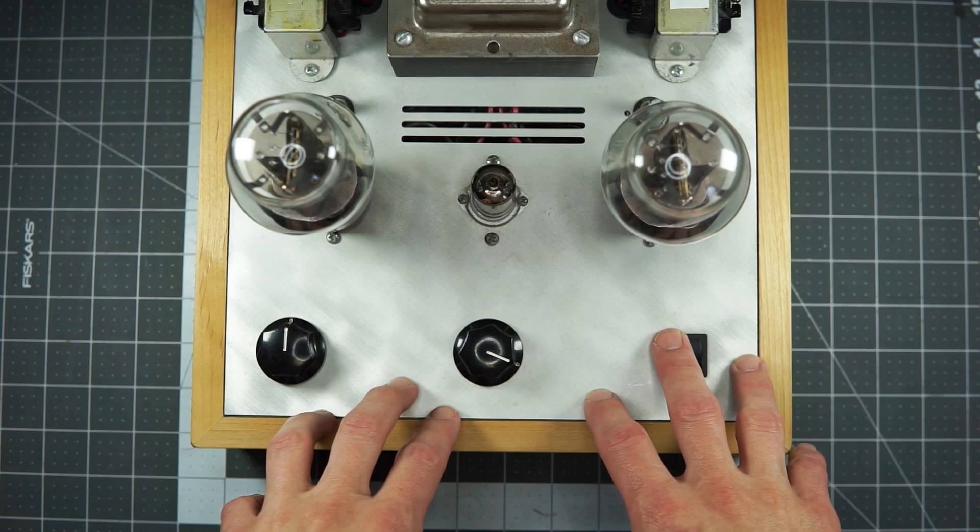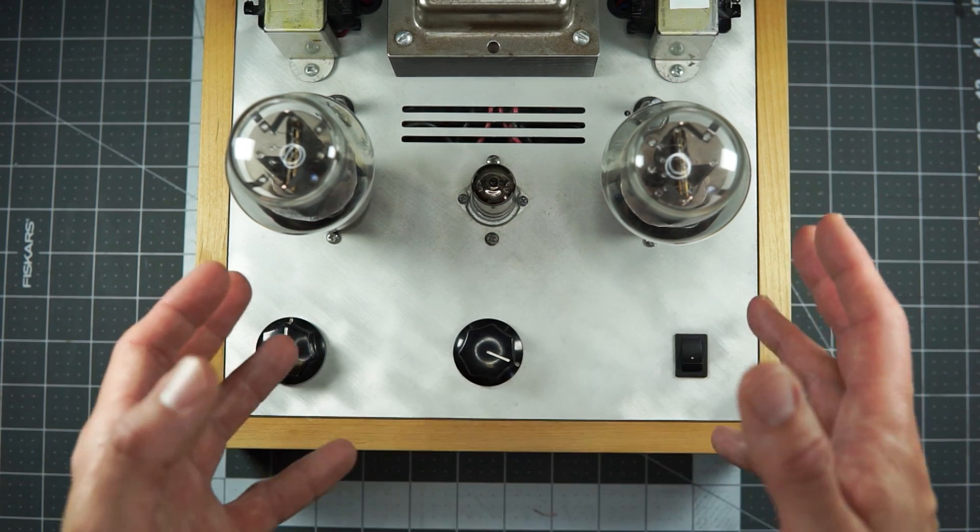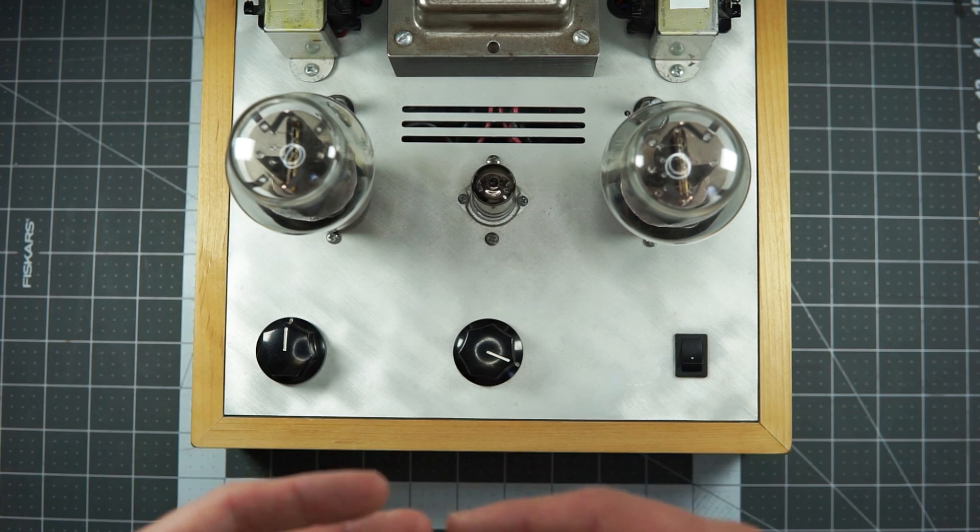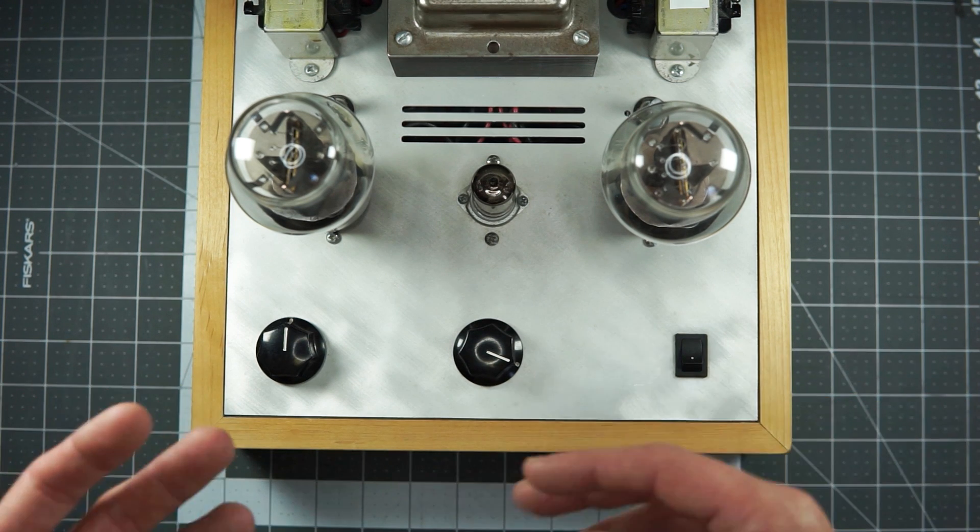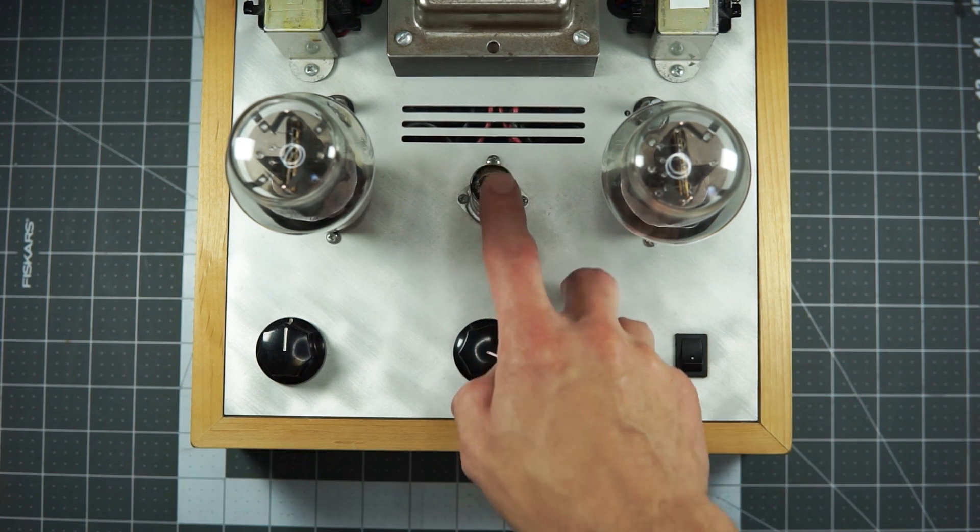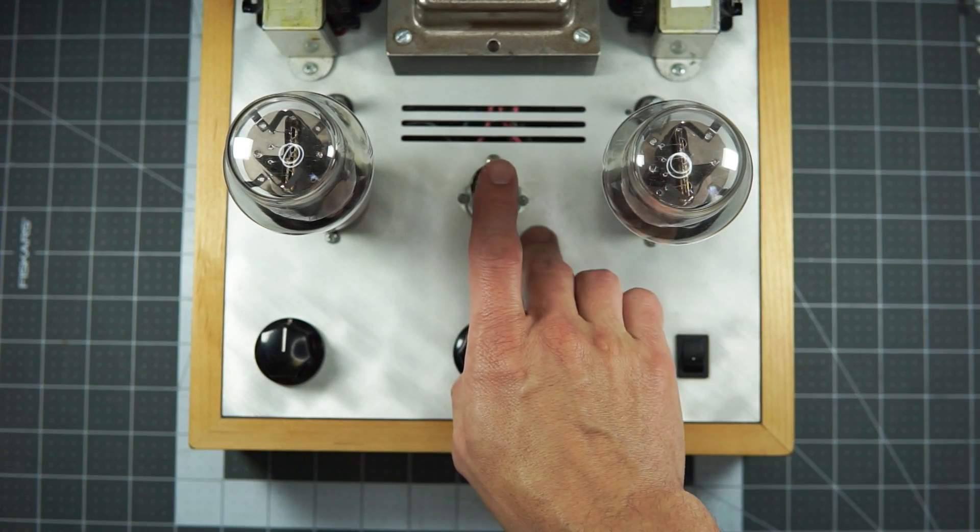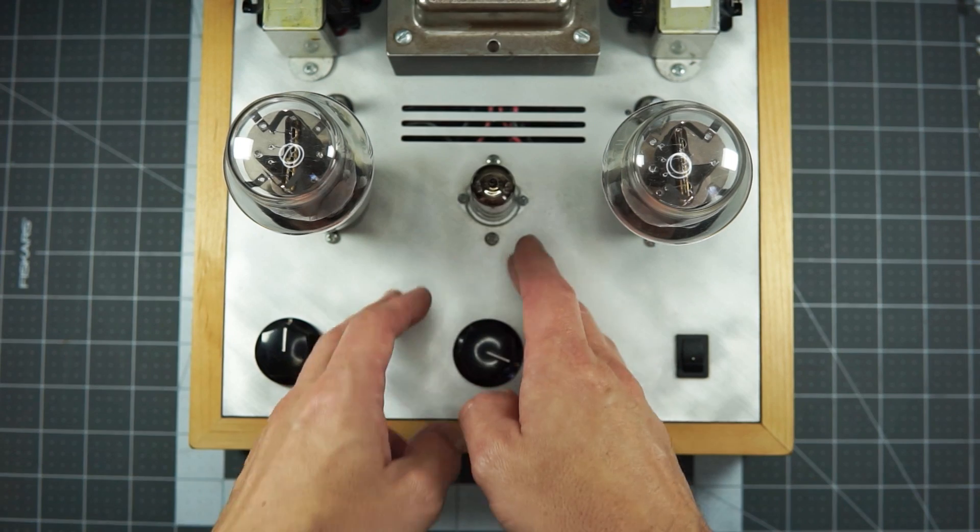So SET amplifiers, right, you're going to have a transformer coupled to support your power tube to do that voltage management. And then in most cases, you're going to have one or more, you might have one per channel, or you might just have like a dual triode gain stage tubes.